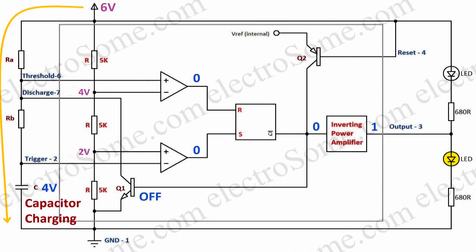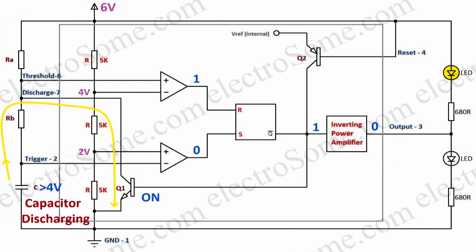When the capacitor voltage becomes greater than 4 volts, the output of the upper comparator becomes 1. This makes the output of the 555 go to 0 and the capacitor starts discharging. The output of the upper comparator becomes 0 when the capacitor voltage drops below 4 volts.